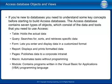If you're new to databases, you need to understand some key concepts before building Access databases. An Access database contains seven types of objects: Table holds the actual data. Query searches for, sorts, and retrieves specific data. Form lets you enter and display data in a customized format. Report displays and prints formatted data. Pages publishes data to a corporate intranet. Macro automates tasks without programming. Module contains programs written in Visual Basic for Applications (VBA).